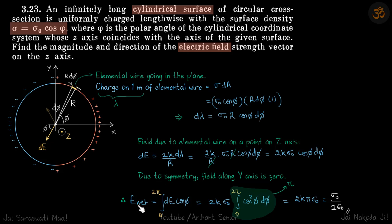So E net is integral of dE cos phi. We are only taking cos phi, the horizontal component. And limits will be complete from 0 to 2 pi.